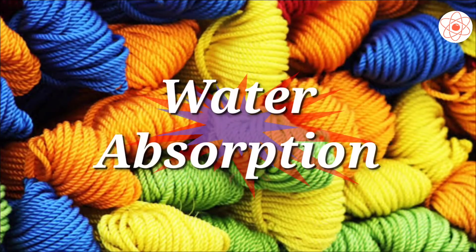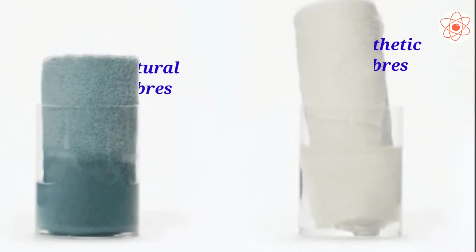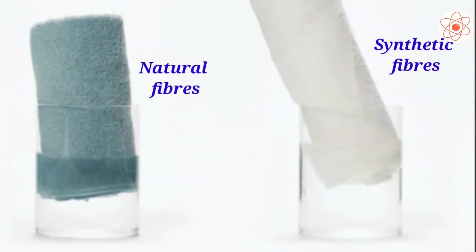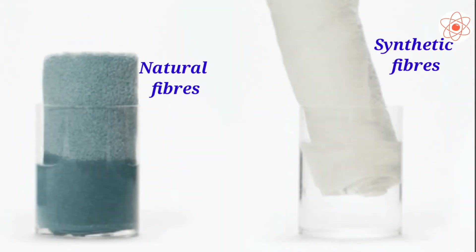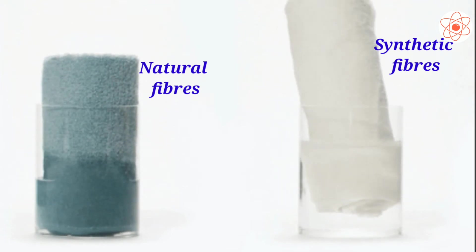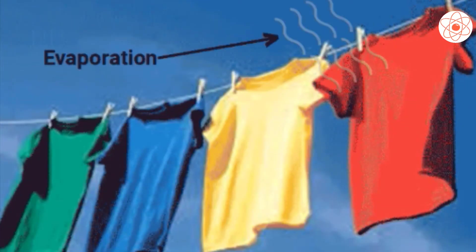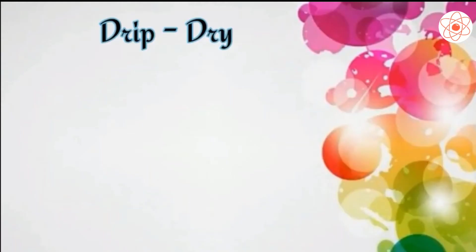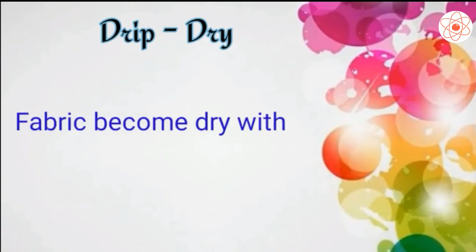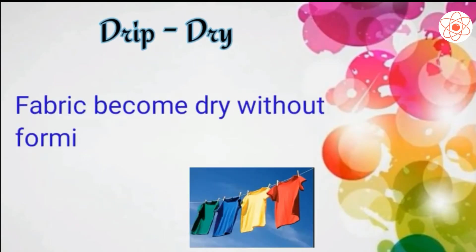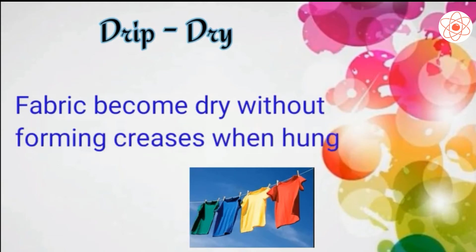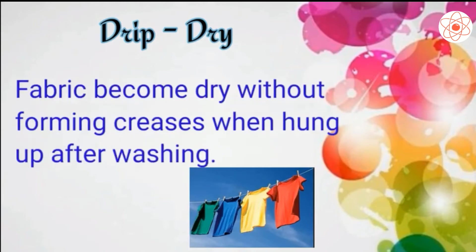Third, water absorption. Synthetic fibers absorb very little water. Due to this property, synthetic clothes dry very fast. Synthetic fibers are said to possess drip dry property, meaning the fabric becomes dry without forming creases when hung up after washing.